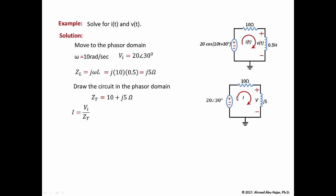Now we solve for the phasor current, which is the phasor voltage divided by the total impedance. So the current I = Vi / Z_total = 20∠30° divided by (10 + j5). Here we are dealing with complex arithmetic, and the best approach is to convert the denominator into polar form.